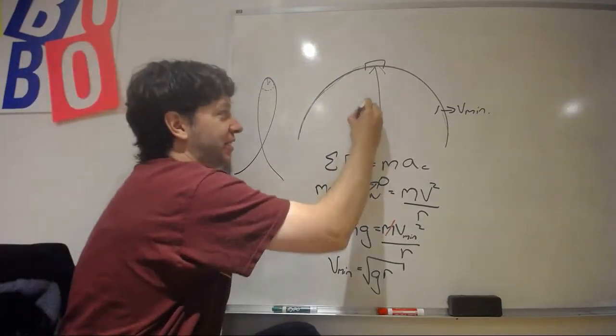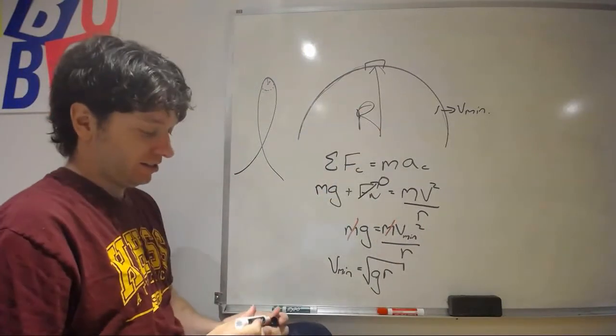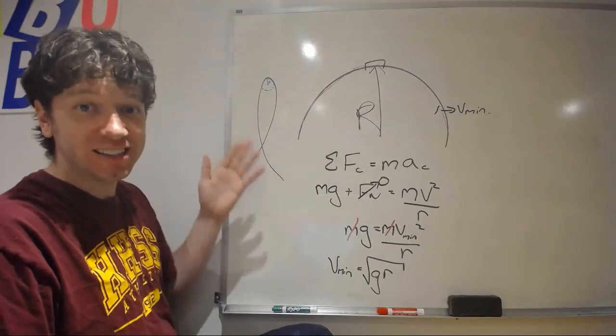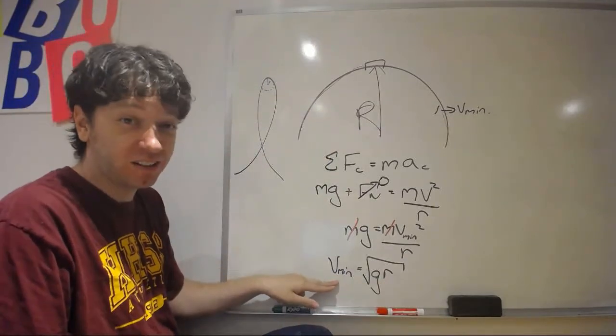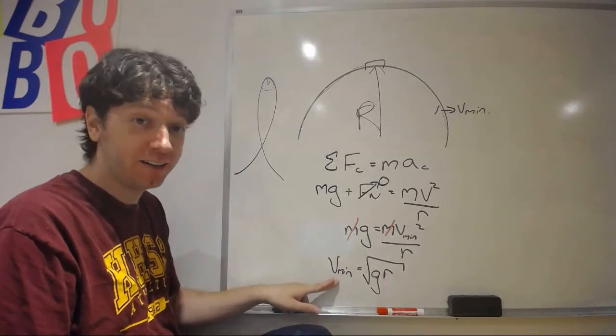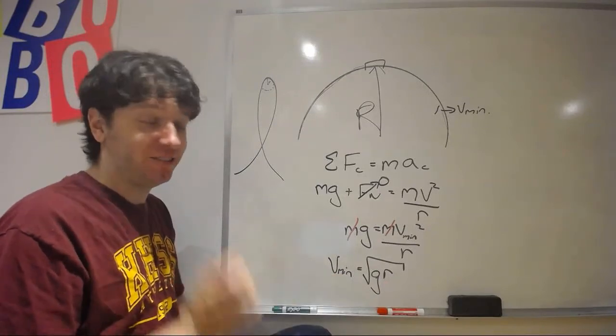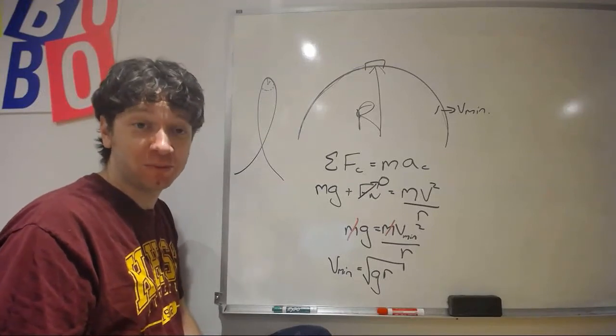So, this one, even though at the same height, has a much bigger radius. A much bigger radius means a much larger minimum velocity required, much larger velocity to make it around the loop, makes for some problems.